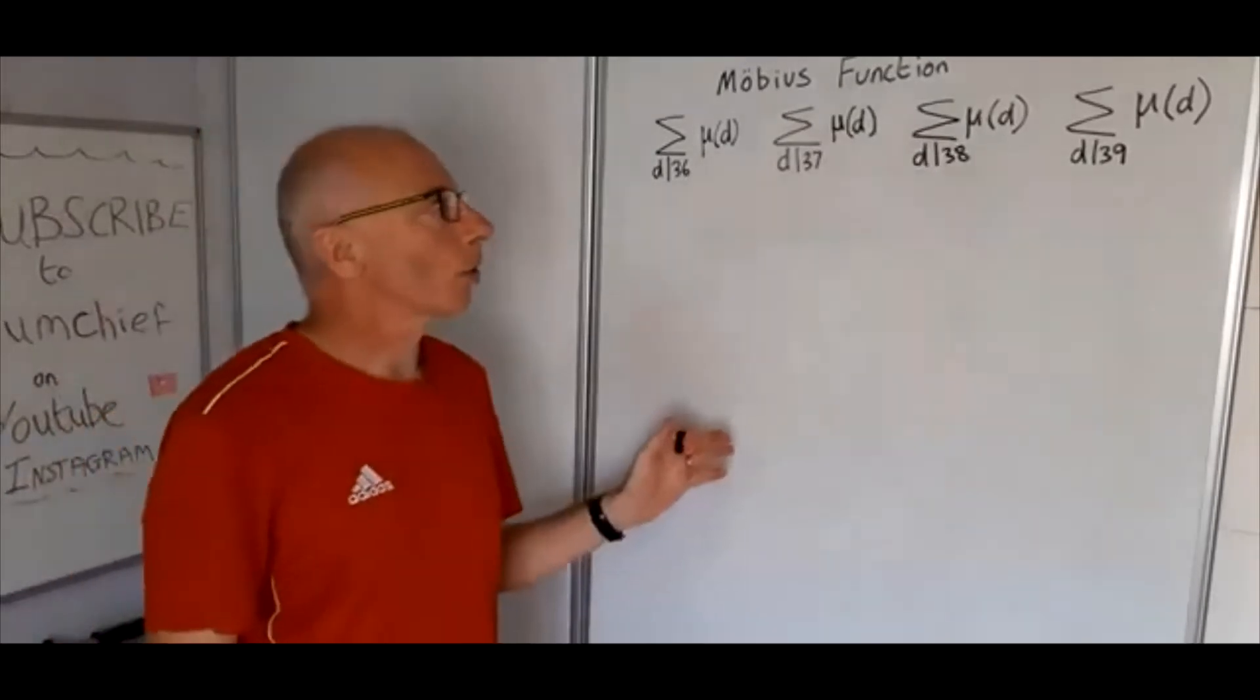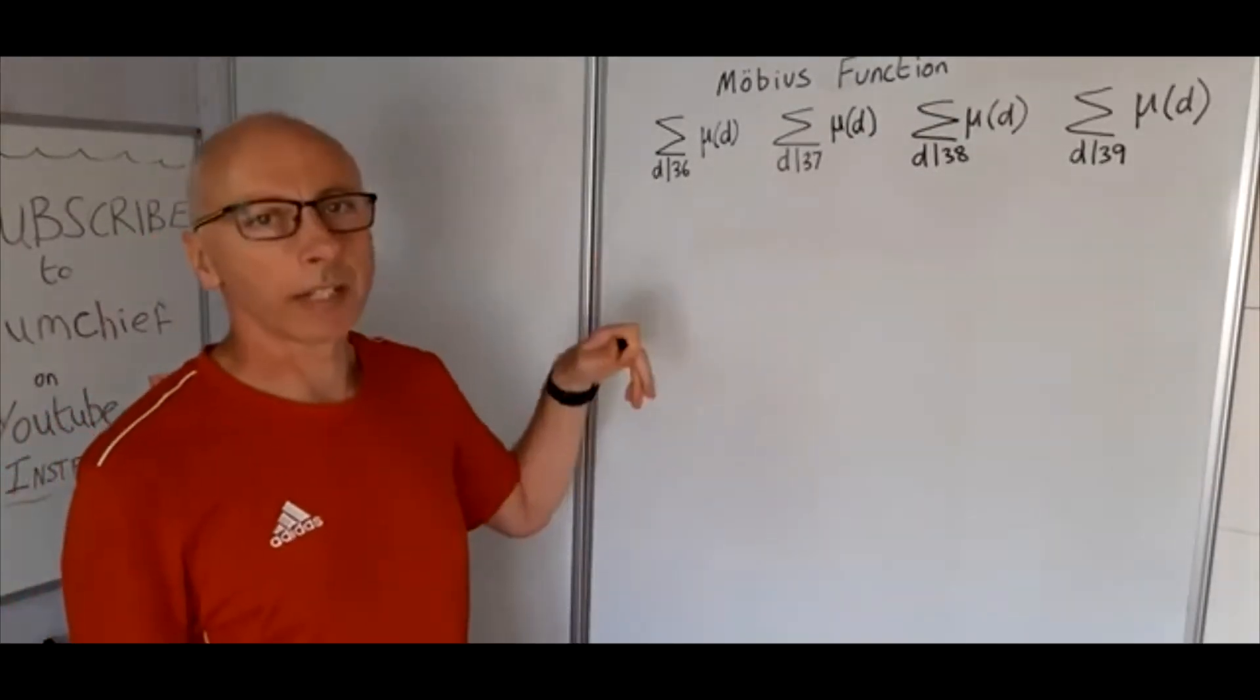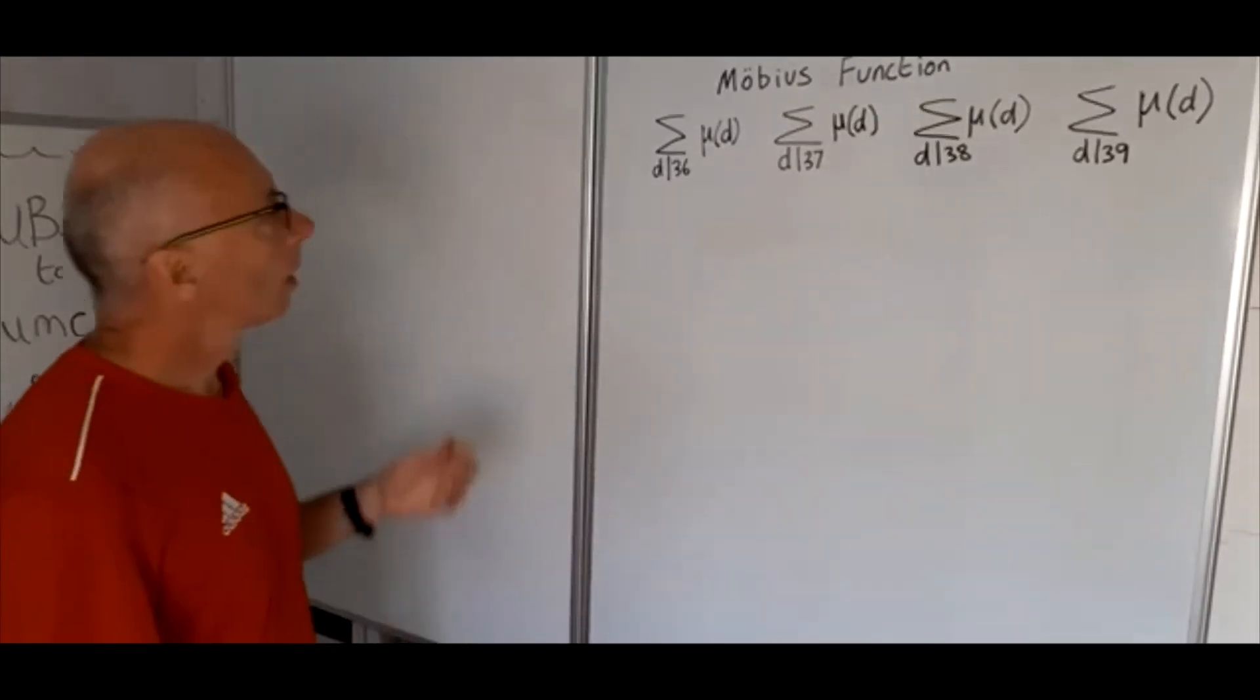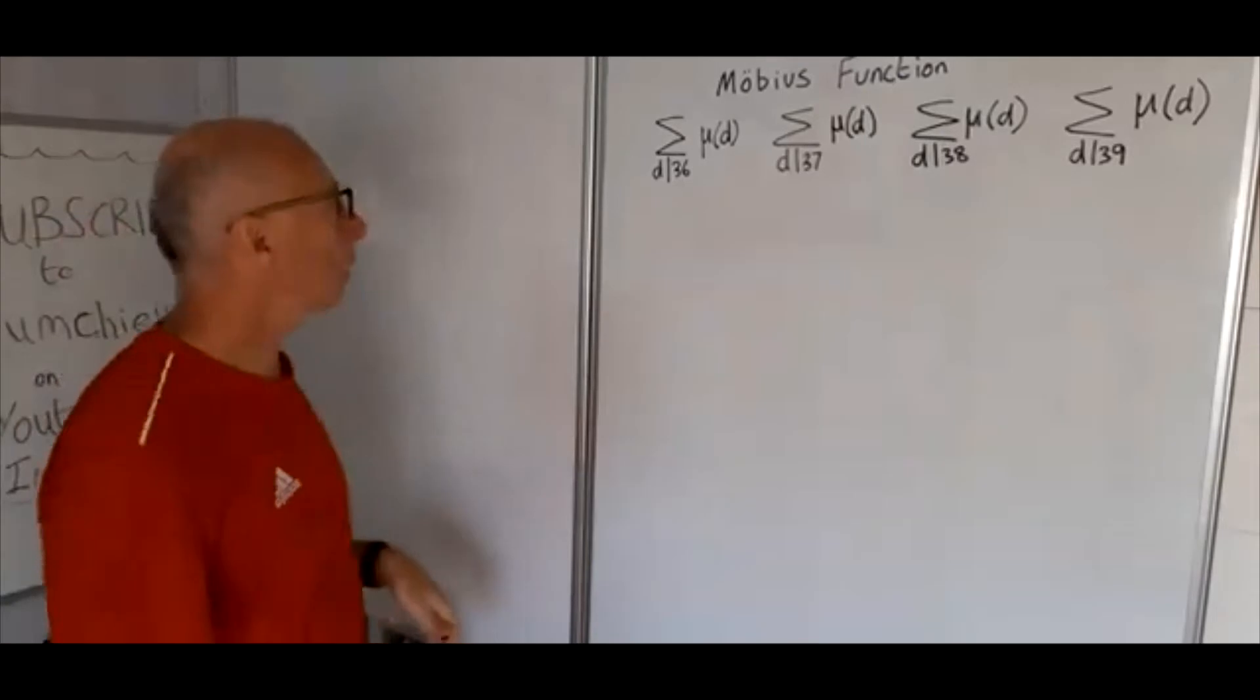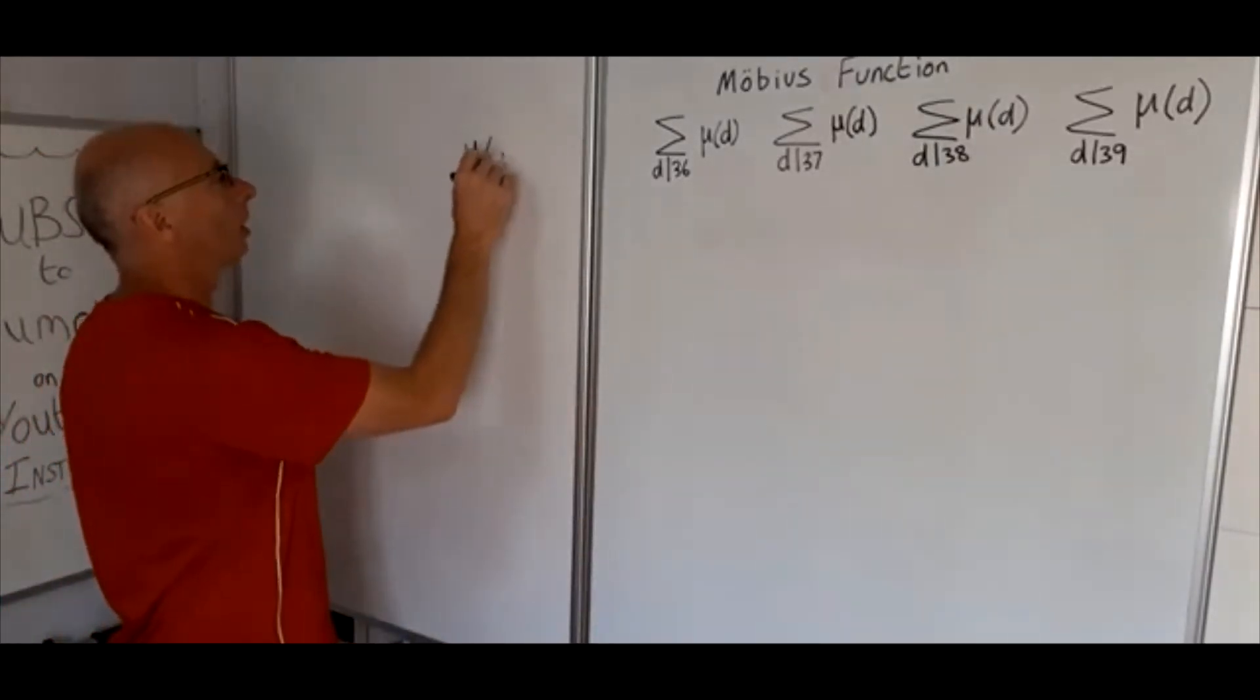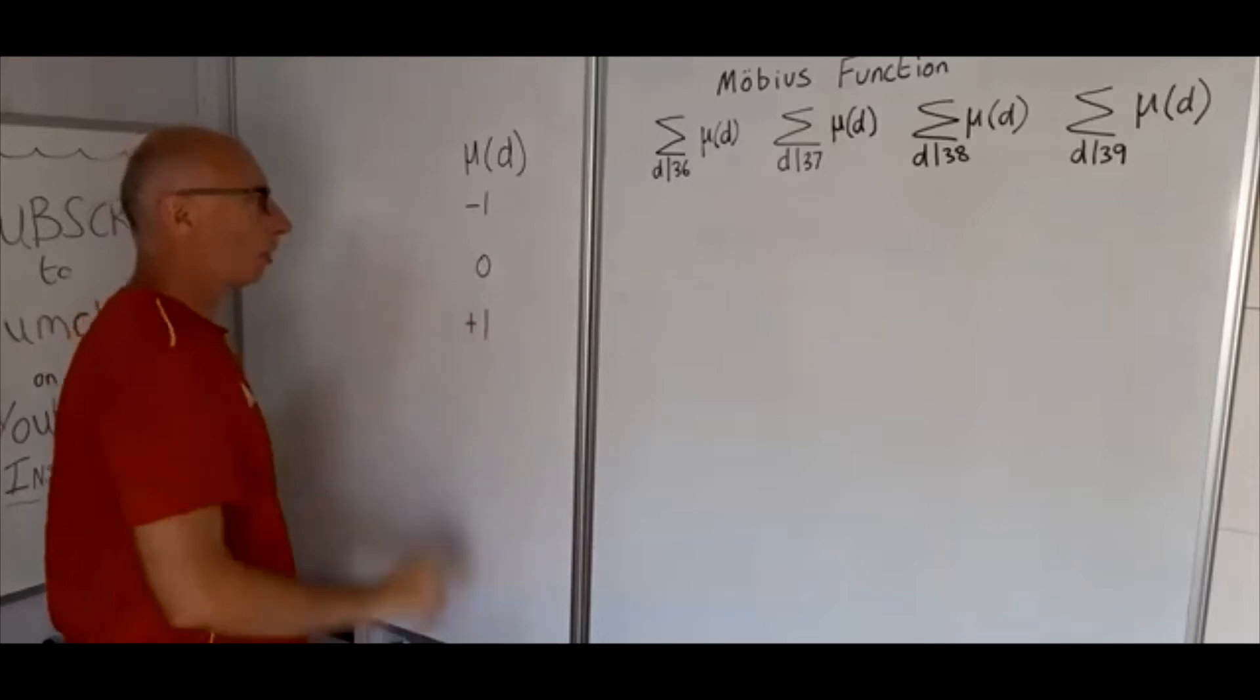Now for those not sure of the Möbius function, if you check the link in the description below I'll have a link there explaining how we come across the Möbius function and its values. But just for a quick refresher, Möbius function, that's MU of D, takes one of three values: minus one, zero, or positive one.